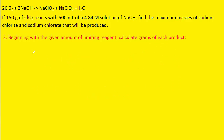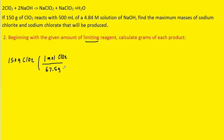In step two, we're going to begin with the given amount of the limiting reagent and calculate the grams of each product. Remember, the limiting reagent was the chlorine dioxide. So let's begin with the 150 grams of ClO₂ and convert that into moles of chlorine dioxide, remembering that one mole was equal to about 67.5 grams. That will cancel the grams of chlorine dioxide.